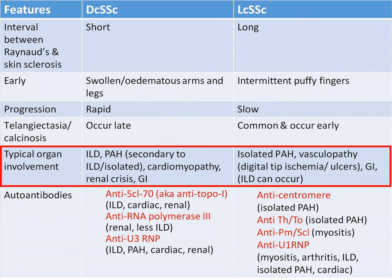Typical organ involvement is outlined in this slide. Gastrointestinal involvement can occur commonly in both subgroups. While interstitial lung disease occurs more frequently in those of the diffuse subtype, it can also occur in those with limited subtype, and this is often driven by anti-Scl-70, which is a risk factor for interstitial lung disease.